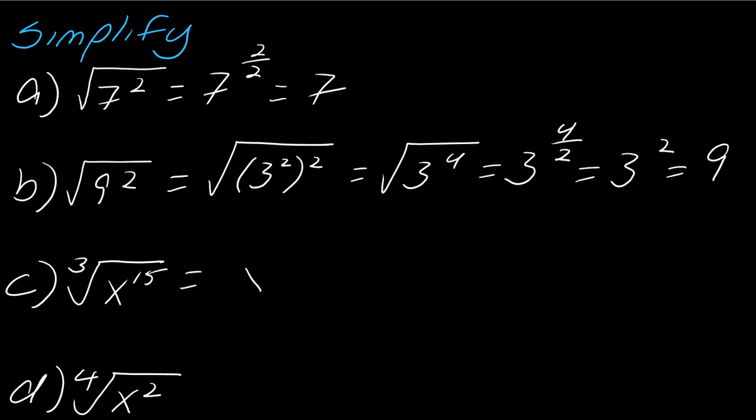Okay, so for this next one, I'm just going to rewrite this as x. So the 15 goes on top, the 3 goes on bottom. 15 divided by 3 is 5, so this is just x to the 5th.